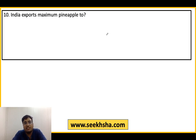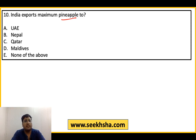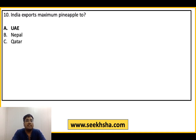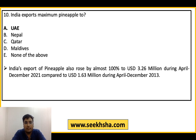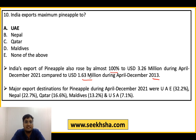Next question: सबसे ज़्यादा pineapple हम किसको export करते हैं? Options: A. UAE, B. Nepal, C. Qatar, D. Maldives, E. None of the above. बिलकुल ध्यान से answer करना है — तुक्केबाज़ी में 110% गलत होंगे। Around 1.63 million USD का pineapple export था जो बढ़कर 3.26 million USD हो गया। Major export destination: UAE सबसे ज़्यादा, followed by Nepal, Qatar, Maldives, और USA।